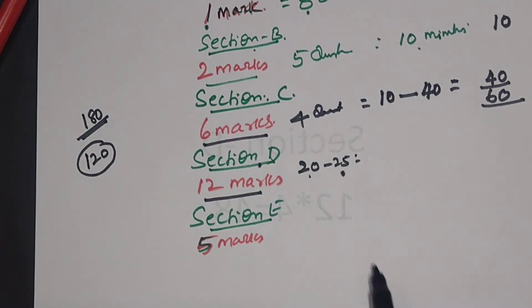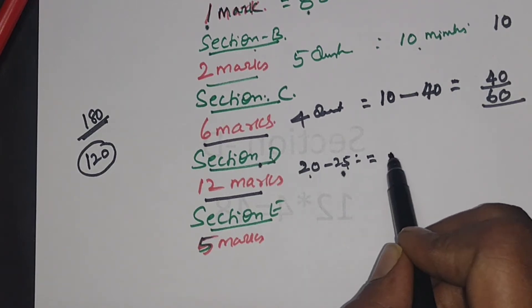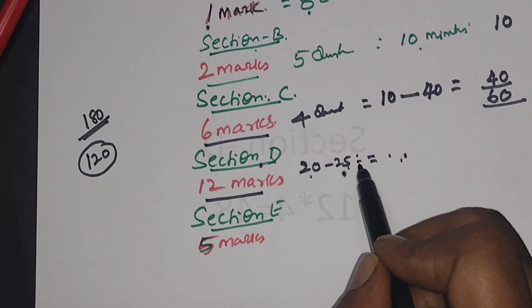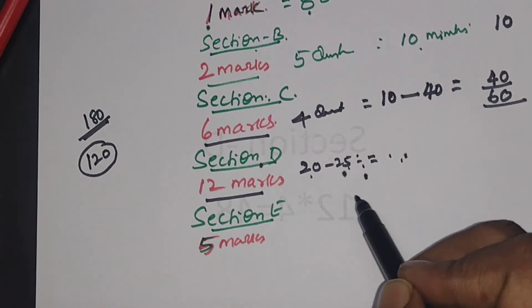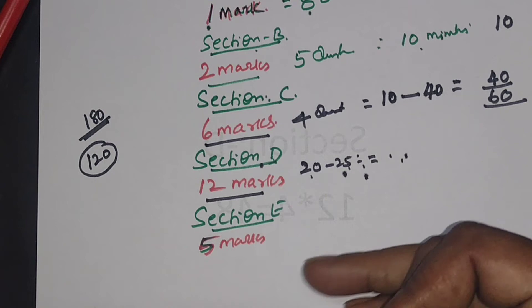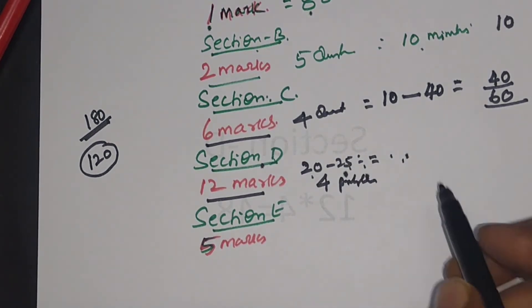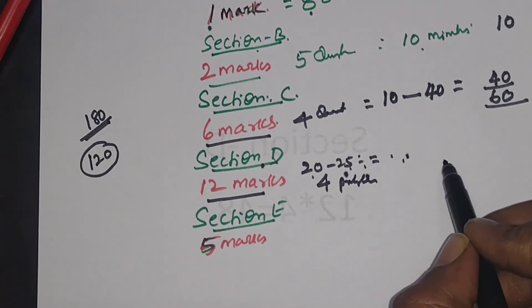The most important thing is that if the problem is not tallied, don't spend time working out the same problem. Immediately concentrate on the next problem, and in the same manner, the third problem and fourth problem, because you have to attend four problems. Maximum you should spend out of 120 minutes.